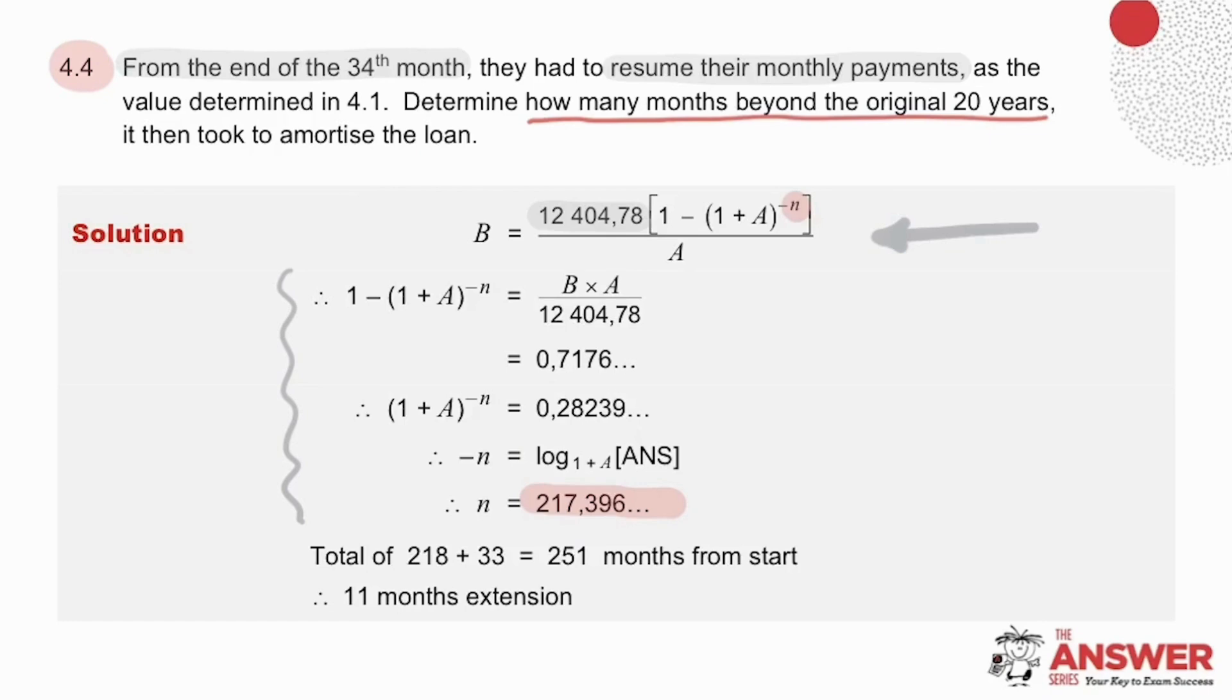So now to calculate the number of months beyond the original 20 years, let's see first how many months in total it has been from the start. So 218 plus 33, and that 33 is the 30 plus the three months payment holiday, which gives a total of 251 months. This means that it took 11 months beyond the 240 months, the 20 years, to amortize the loan.